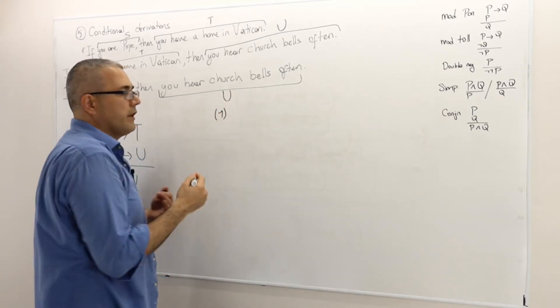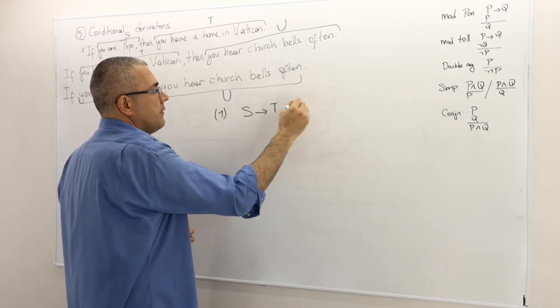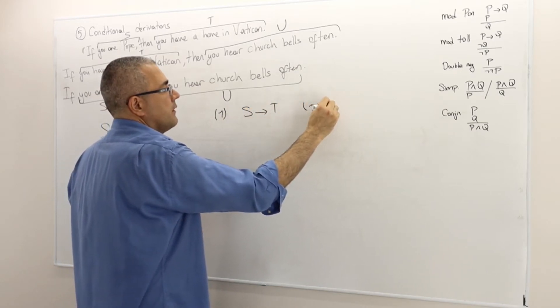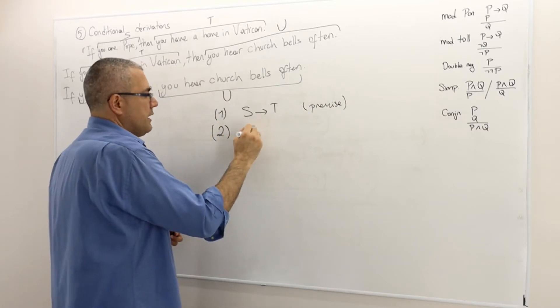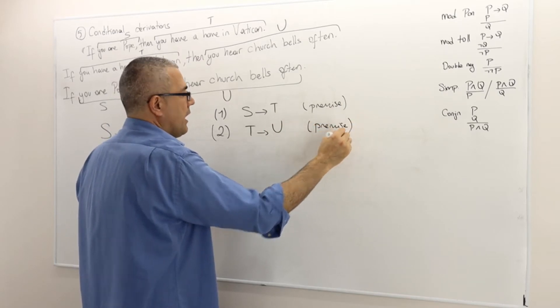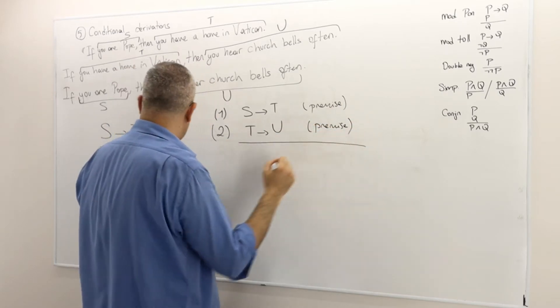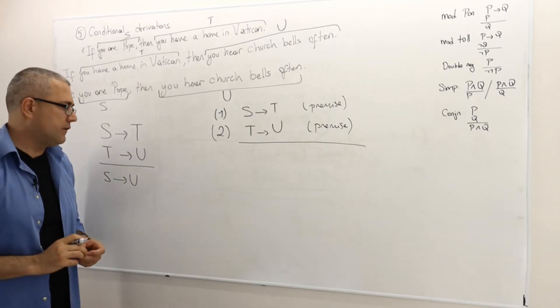As usual write down the premises. Premise number one: S implies T. Two: T implies U. This is the second premise and I would like to reach the conclusion S implies U. How do I prove S implies U?